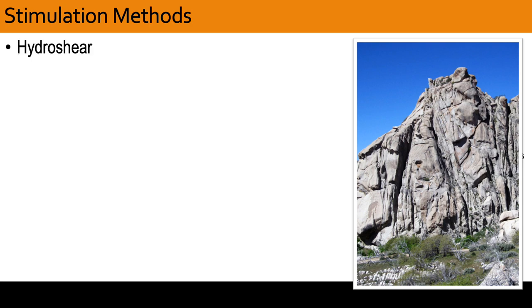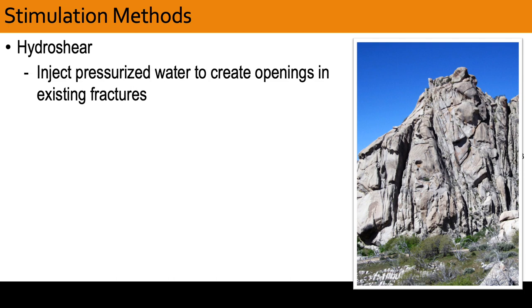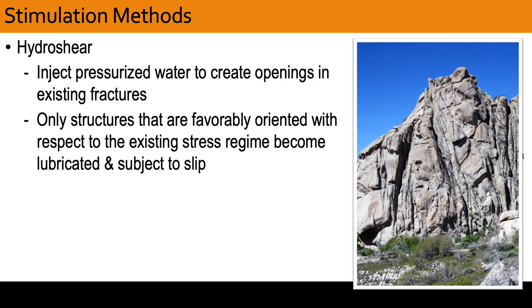For hydro-shearing, then, pressurized cold water is injected to create openings in existing fractures. Only structures that are favorably oriented with respect to the existing stress regime become lubricated and subject to slip. The stimulated structures that intersect one another create a 3D fracture mesh which controls the flow and heating of cold water that ultimately provide connected pathways between the wells. This results in each well having a number of exit and entry points.